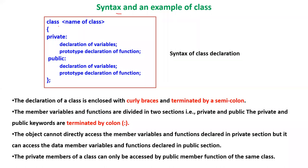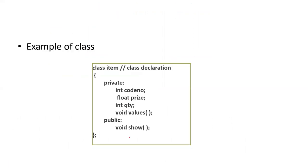This is the syntax: 'class' is the keyword, followed by the name of the class. Private and public are the two access specifier keywords. In the private section, followed by a colon, you declare variables and functions. Similarly in the public section. The class declaration is enclosed with a curly brace and terminated with a semicolon. Member variables and functions are divided into two sections — private and public — both terminated by a colon. Objects cannot directly access member variables and functions declared in the private section, but can access those declared in the public section. The private members of a class can only be accessed by the public member functions of the class.